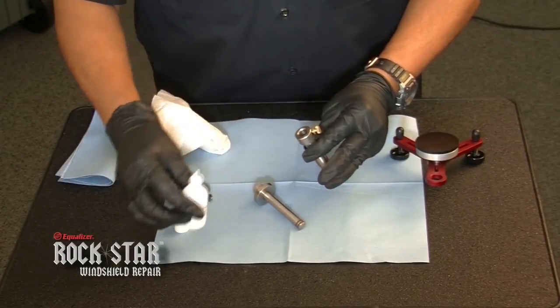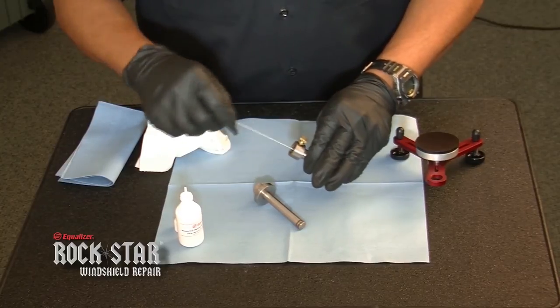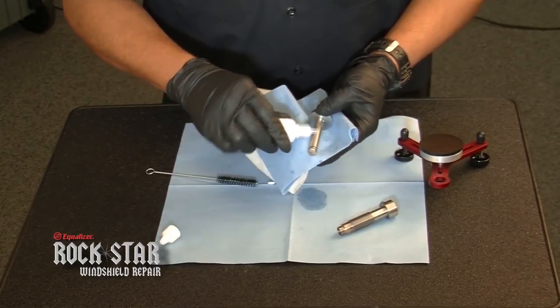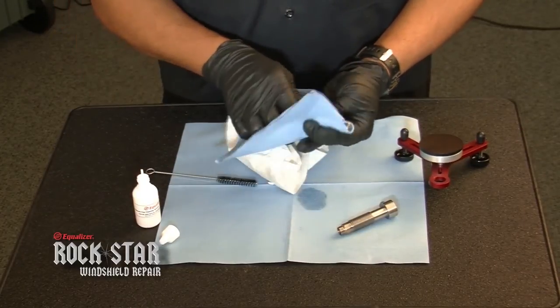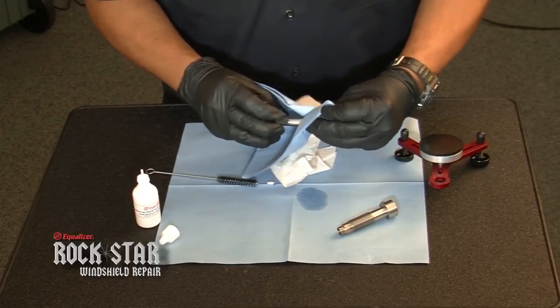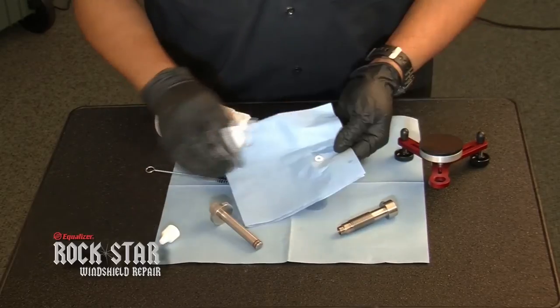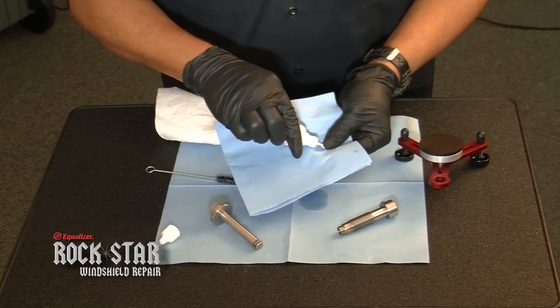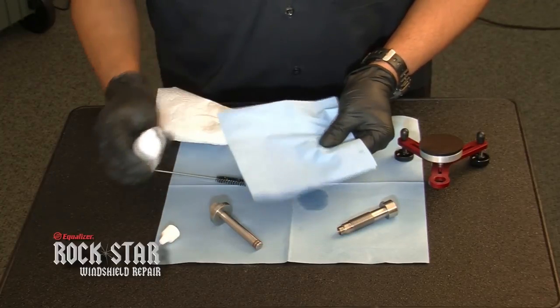Clean the resin off of and out of your injector, o-rings, and bridge with your cleaning solution. Keeping these items clean and free of buildup assures no contamination on your next repair, keeps proper function of the tool, and will increase the life of your Rockstar.